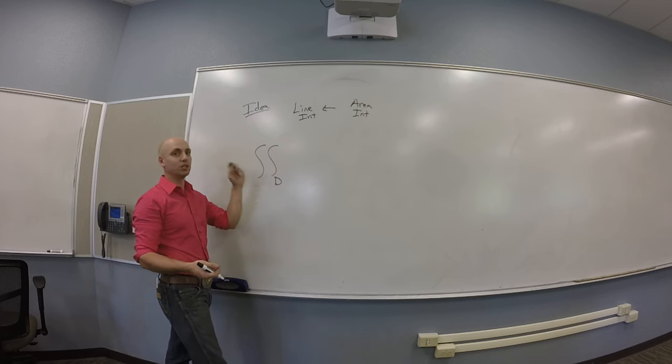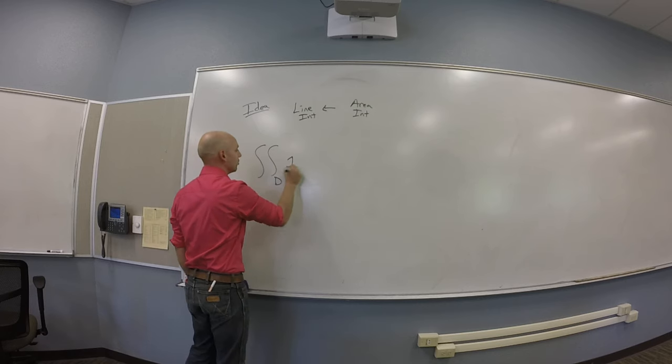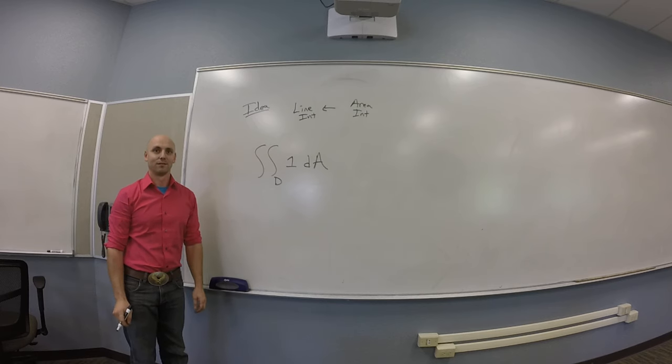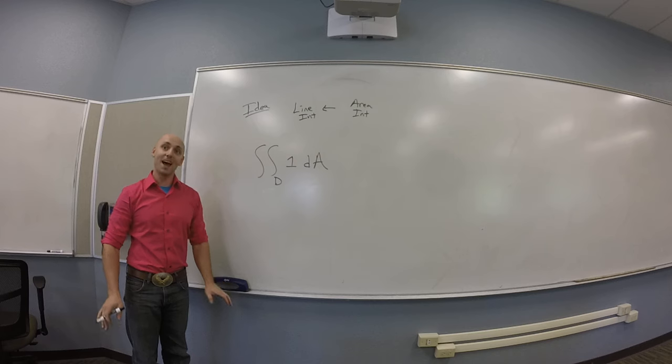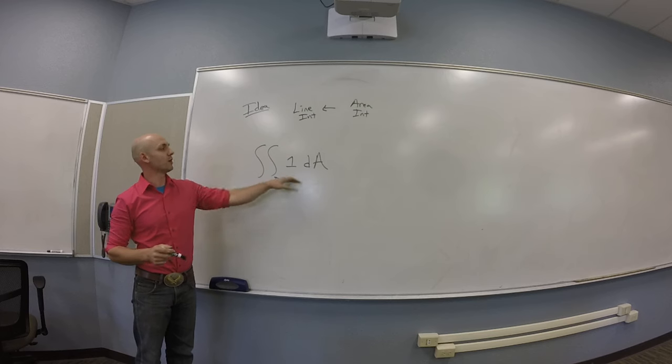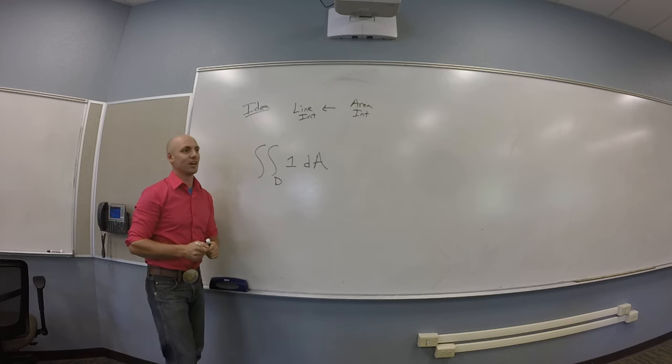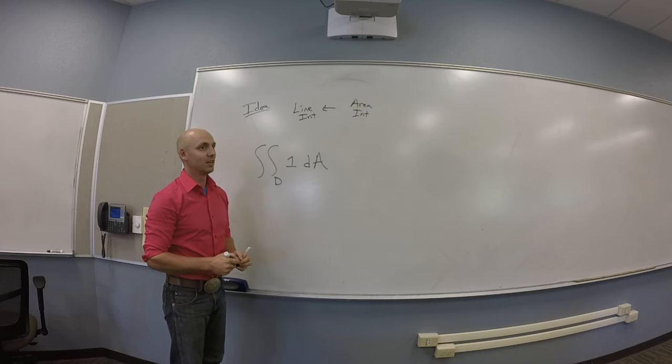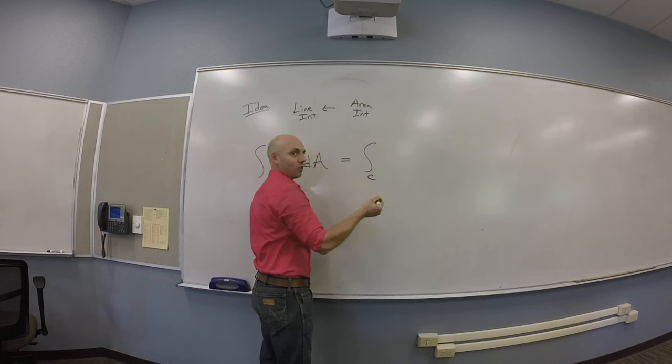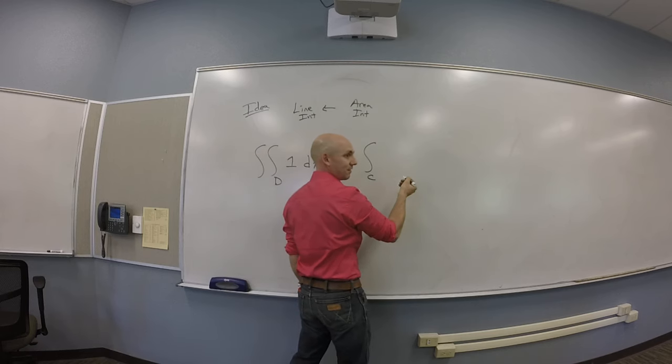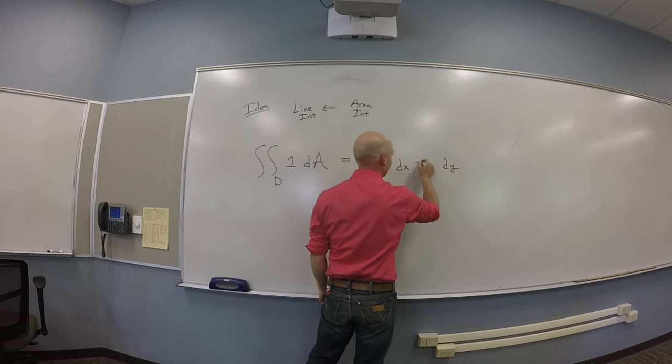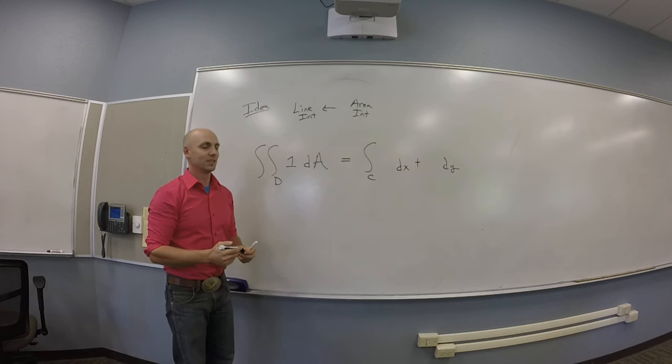So I'm assuming I have a region D with such a boundary. And I would like to do the simplest possible example, where I would like to integrate one over that area. This should not be that hard. We should be able to pull this off. So if this is the area side of Green's, I should be able to convert this into some kind of line integral over C of F·dR, something dx plus something dy. You guys all see that?